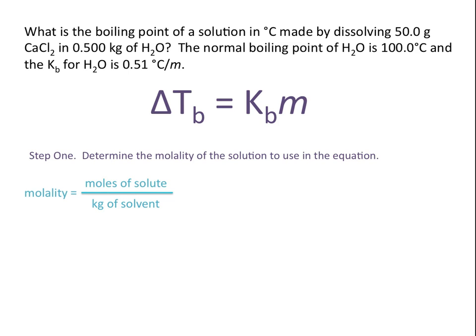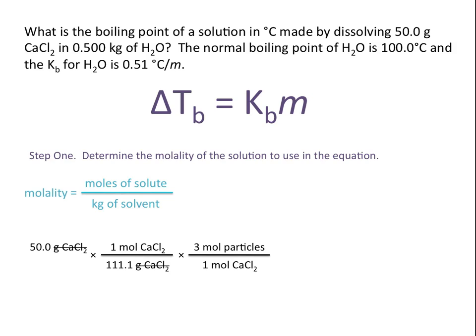Our first step is to determine the molality of the solution. Molality is moles of solute per kilograms of solvent, so first we calculate the moles of CaCl₂ using the molar mass of calcium chloride, which cancels units of grams. Calcium chloride is an ionic compound that ionizes in water to form three moles of particles — one calcium ion and two chlorine ions — giving a total of 1.35 moles of particles.